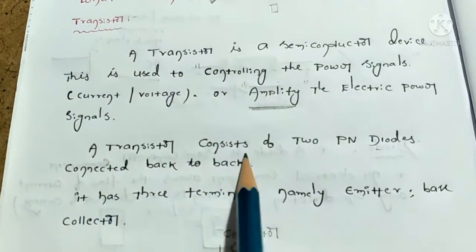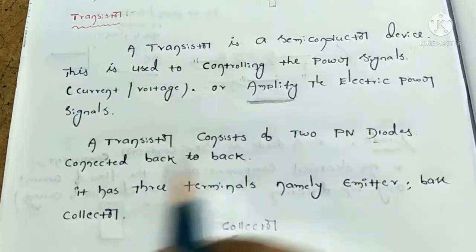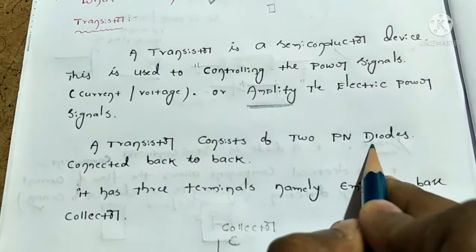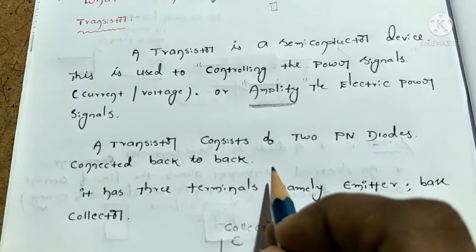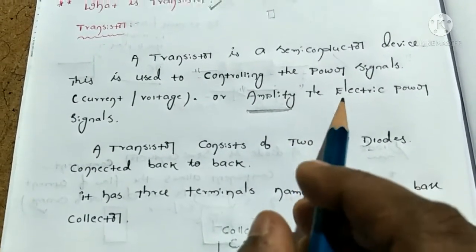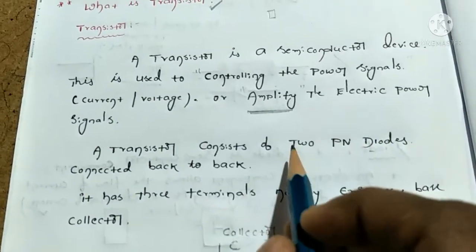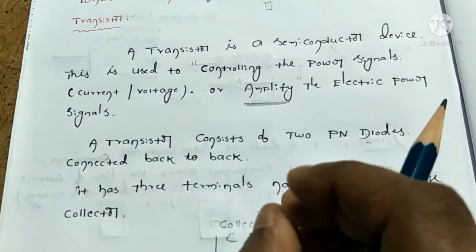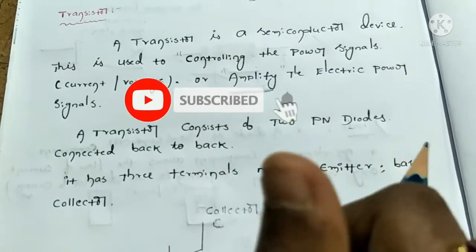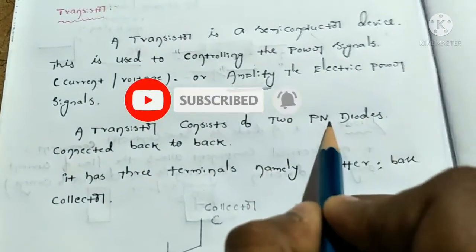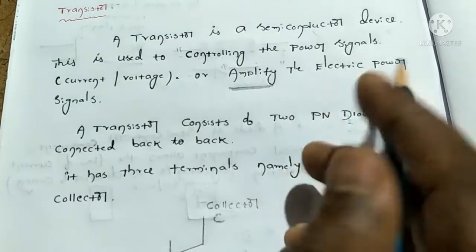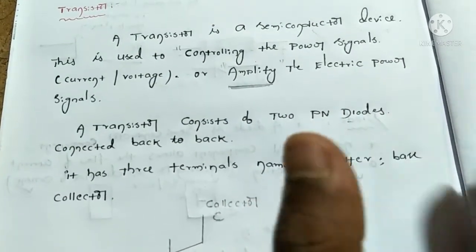A transistor consists of two PN diodes connected back-to-back. A diode allows only one direction flow of electric power signals. I will show you the diode topic in the description of this video.